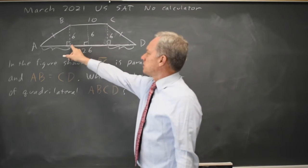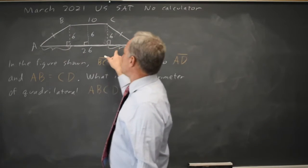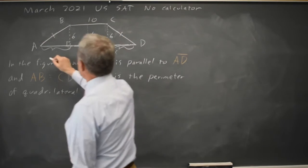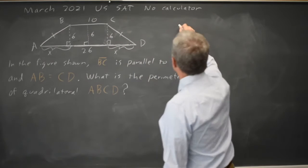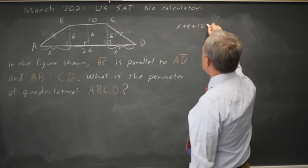Since the middle length is 10, the sum of these two remaining distances—let's call them X and X—means X plus X plus 10 equals 26.